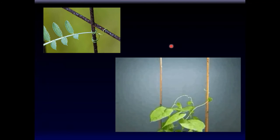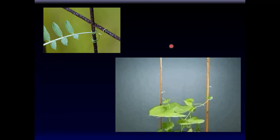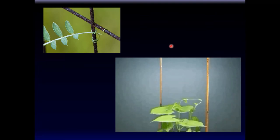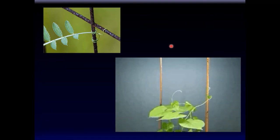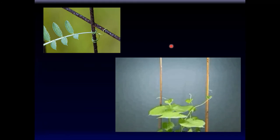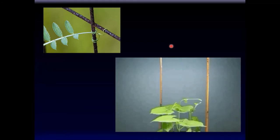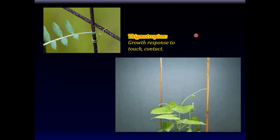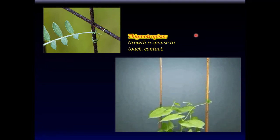Here again is time-lapse photography — quite remarkable how a plant uses adjacent structures for support and growth. This response is touch-mediated; in other words, the growth pattern of this plant changes based on touch. This is called thigmotropism — a growth response to touch or contact.